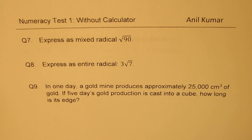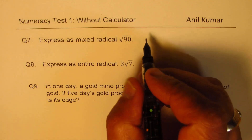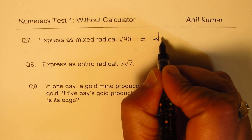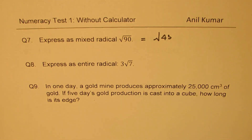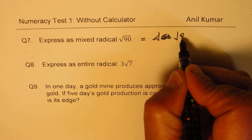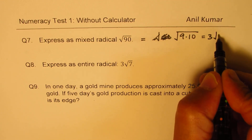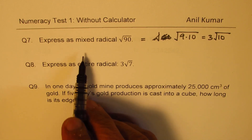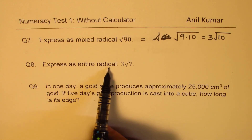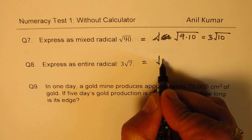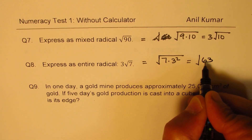Questions 7, 8, and 9 involve square roots. Express as a mixed radical: square root of 90. We write 90 as 9 times 10 — since 9 is a perfect square, square root of 9 is 3, giving 3 times square root of 10. Express as an entire radical: 3 square root of 7. We bring the 3 inside as 3 squared equals 9, so square root of 9 times 7 equals square root of 63.